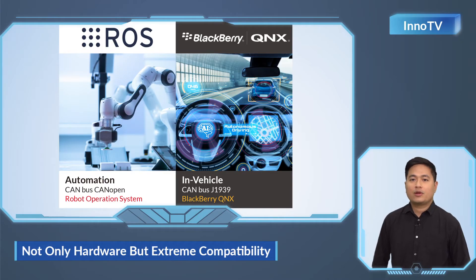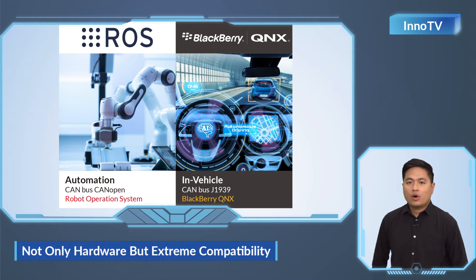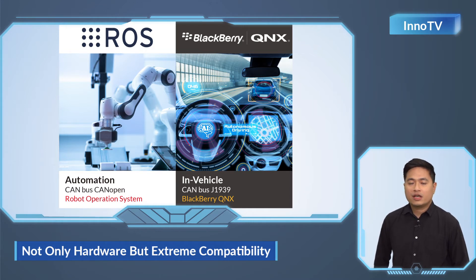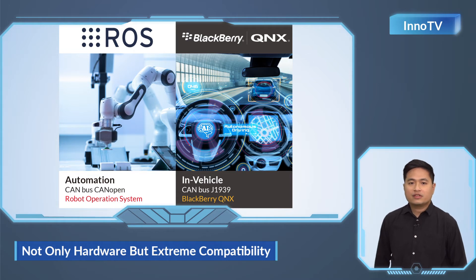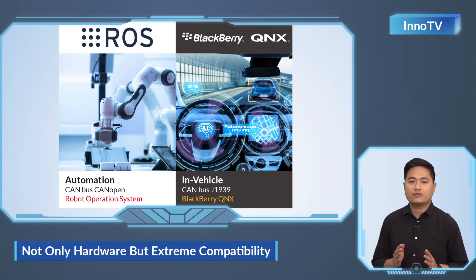In automation and in-vehicle applications, many companies choose a dedicated OS instead of Windows or Linux as their operating system. ROS is an open-source robot OS, and more and more applications are adopting it. On the other hand, QNX, a real-time OS developed by BlackBerry, has decades of history in automotive applications. InnoDisc CAN bus modules support the latest versions of ROS and QNX, providing customers with the most comprehensive compatibility.